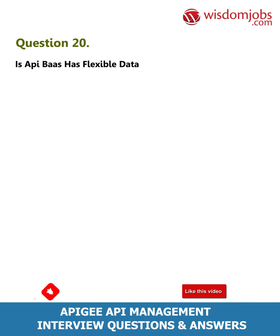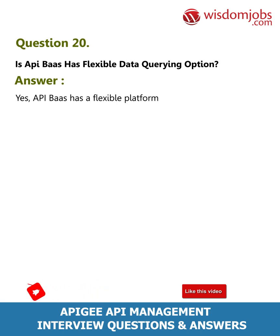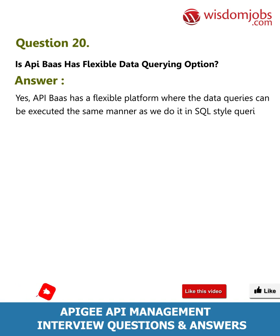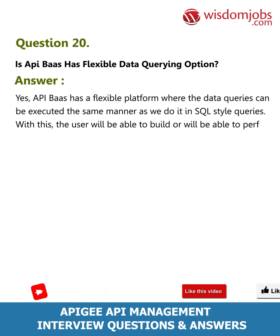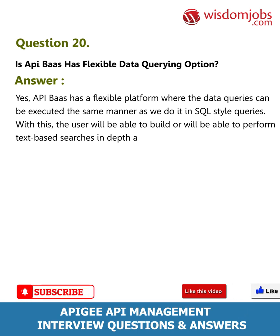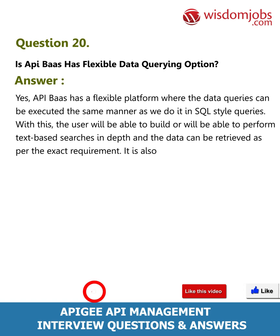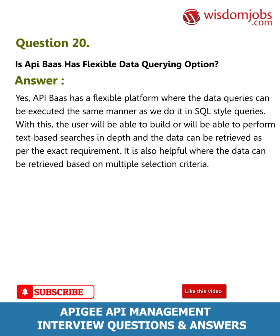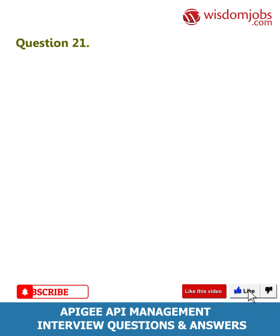Question 20: Does API BaaS have a flexible data querying option? Answer: Yes, API BaaS has a flexible platform where data queries can be executed in the same manner as SQL-style queries. Users are able to perform text-based searches in depth, and data can be retrieved as per the exact requirement. It is also helpful for retrieving data based on multiple selection criteria.